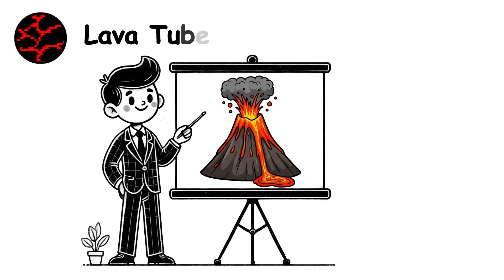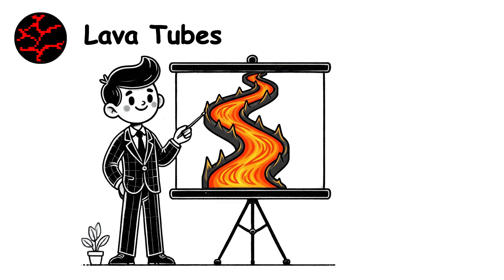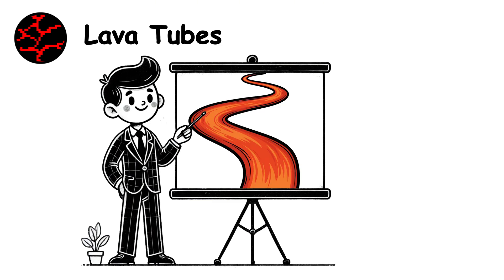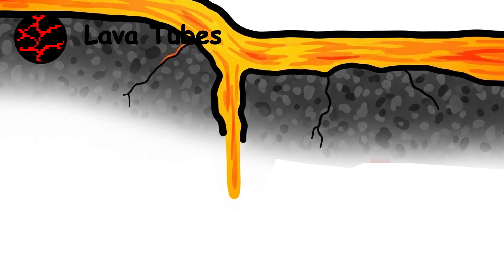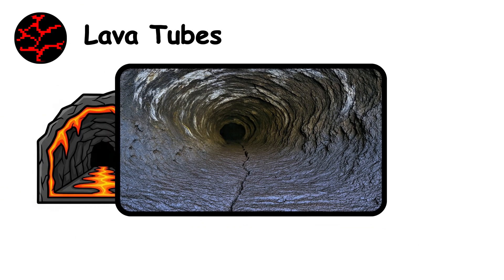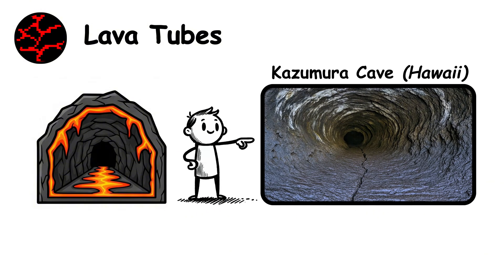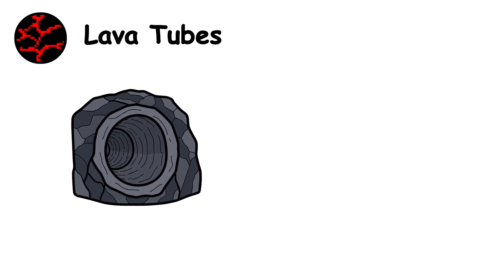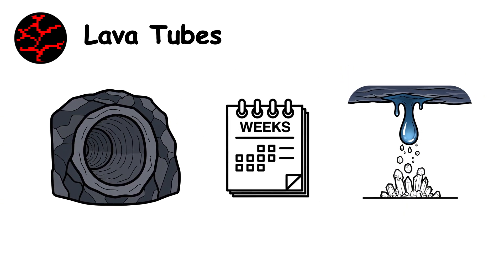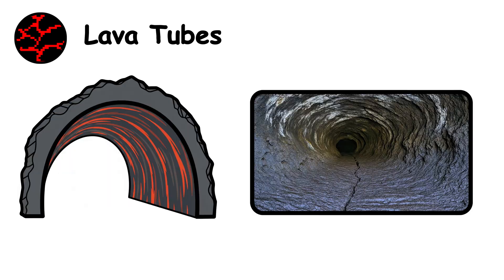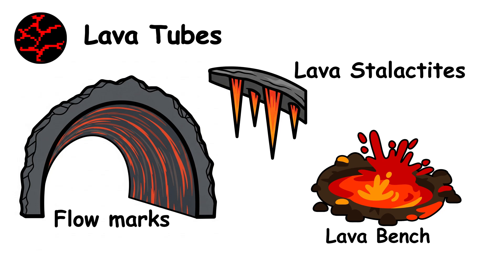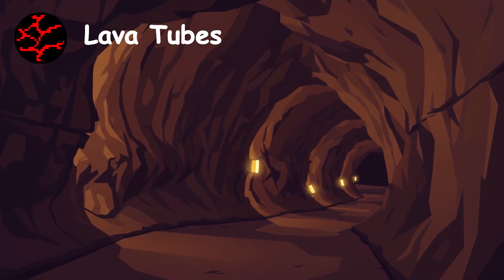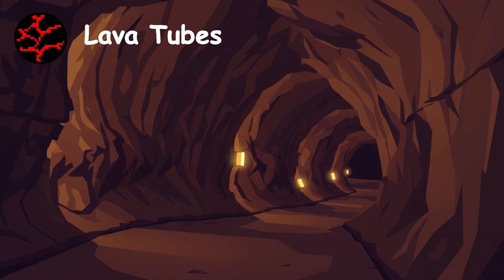Lava Tubes. When volcanoes erupt, lava flows like rivers. The surface cools and solidifies while hot lava continues flowing beneath. When the eruption ends, the molten lava drains out, leaving hollow tunnels. Kazumura Cave in Hawaii represents the longest lava tube on Earth at 40.7 miles. These caves form rapidly, sometimes in just weeks, compared to the millions of years for solution caves. The interior surfaces often display flow marks, lava stalactites, and benches where lava temporarily pooled. Lava tubes typically feature smooth floors, arched ceilings, and round cross sections.